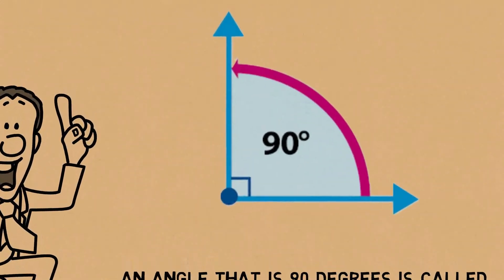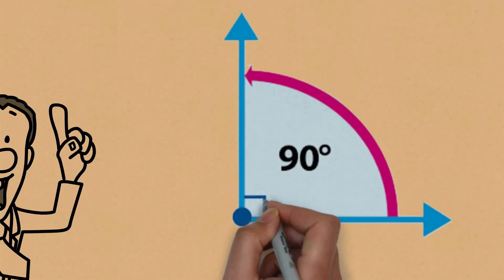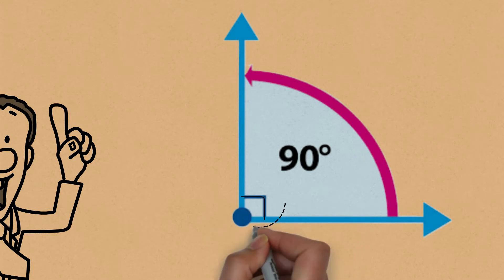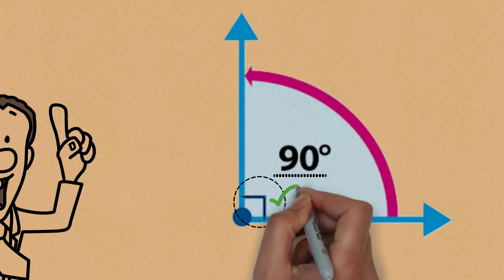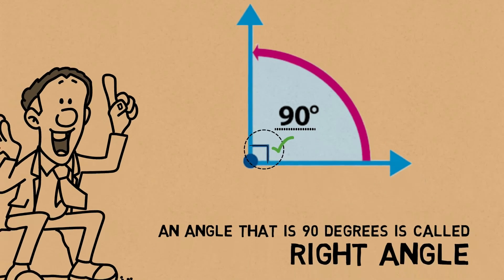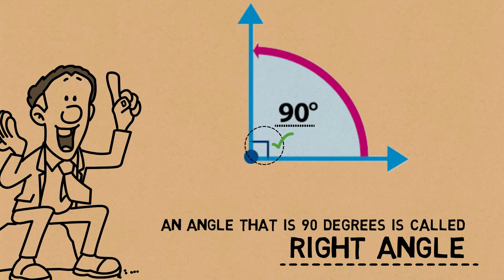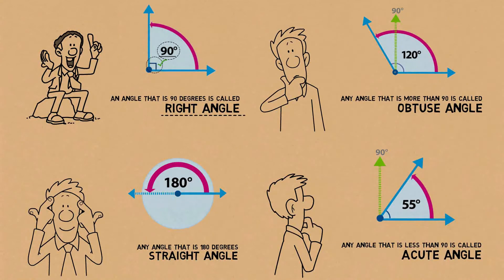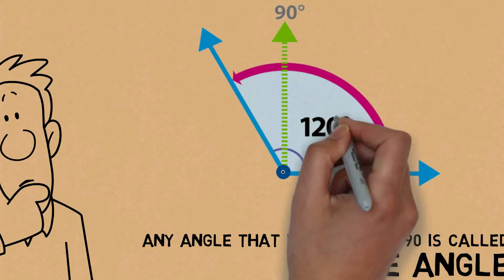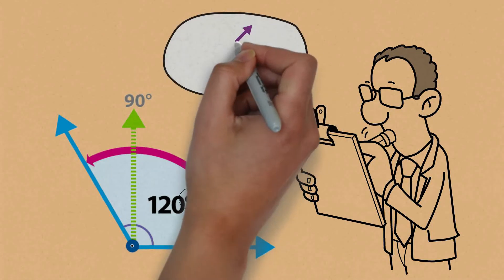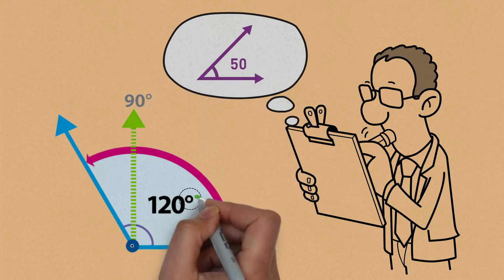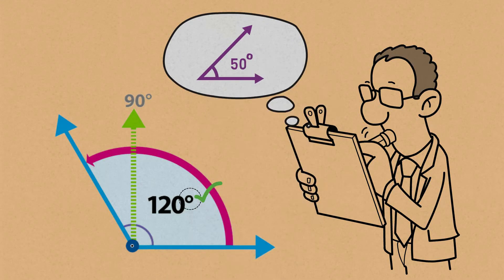Right angles are represented with a small square at the base of the angle. So when you see a square at the base of an angle, even if the degree measurement is not shown, it means it's a right angle — it's 90 degrees. This symbol is called a degree sign. When you're measuring angles and writing them down, you would generally mark this small symbol at the top right of the number.